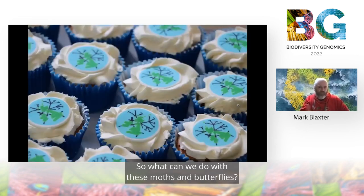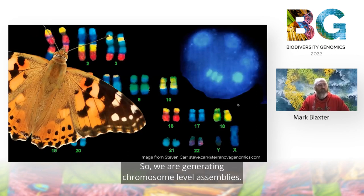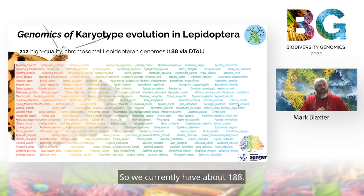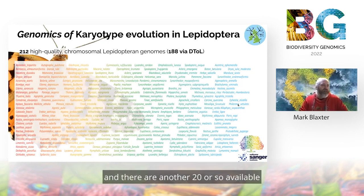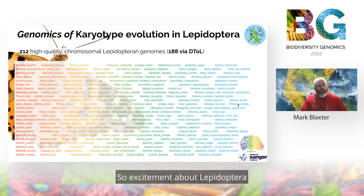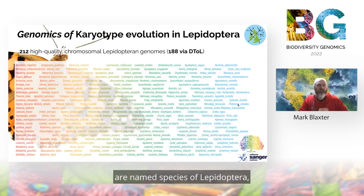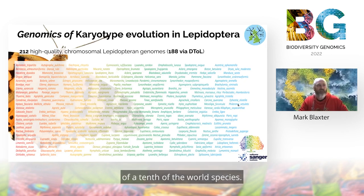So what can we do with these moths and butterflies? One of the things we're interested in is chromosomes. We're generating chromosome-level assemblies — what can this tell us about the evolution of chromosomes? We have 23 in humans, and why 23? We currently have about 188 high-quality chromosomal lepidopteran assemblies, plus another 20 or so in the public databases, and so we can co-analyse these to ask how chromosomes evolve in Lepidoptera. Lepidoptera are exciting not just because they're pretty, but also because they represent about 10% of all animal species — 180,000 named species out of 1.8 million. Understanding the chromosomes of Lepidoptera means we've understood the evolution of chromosomes in a tenth of the world's species.